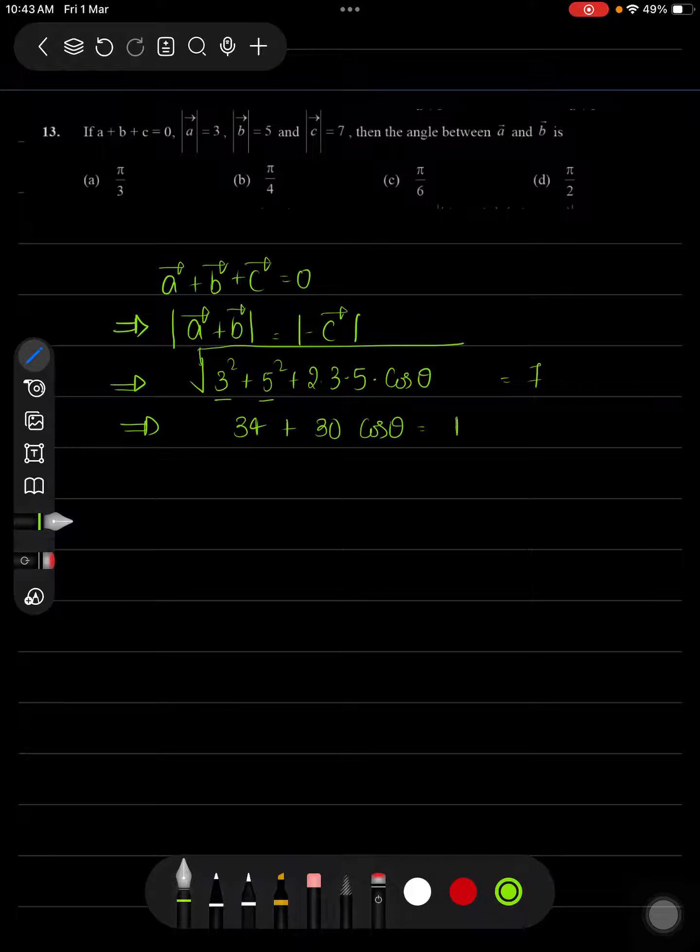is equal to 7² which is 49. So 34 comes here, 49 − 34 will become 15. We'll be getting 30 cos θ = 15. This 30 will cancel out two times.